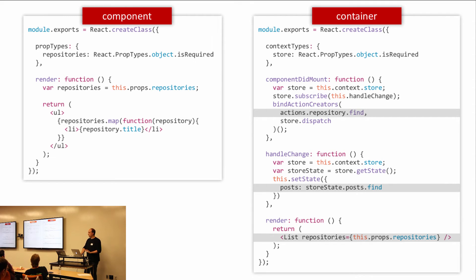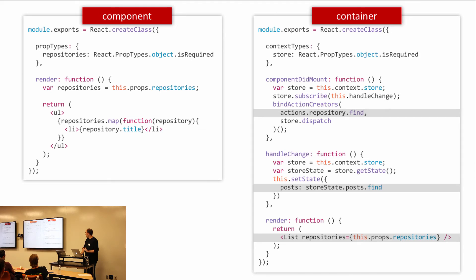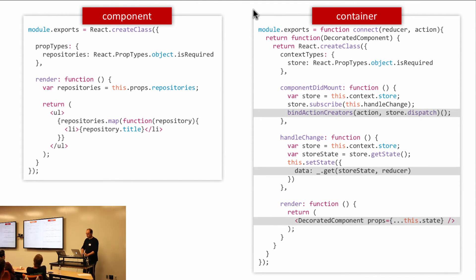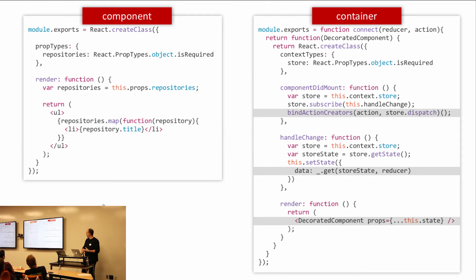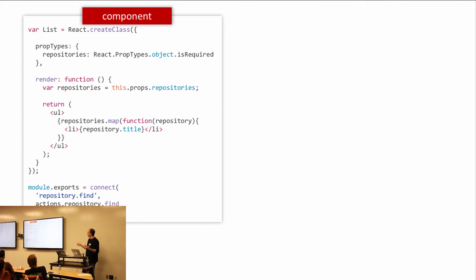Following the same pattern as with actions, if you look at a container file, everything is generic except for three things: what action you want, what piece of state in the store you care about, and what component should actually be rendering that data. If we take advantage of that commonality, we can refactor it into essentially a function — the decorator pattern, basically a function that returns a function that returns a component. At the top you say: this is the reducer to get state from, this is the action to call if that data doesn't exist, and this is the component to pass that data to.